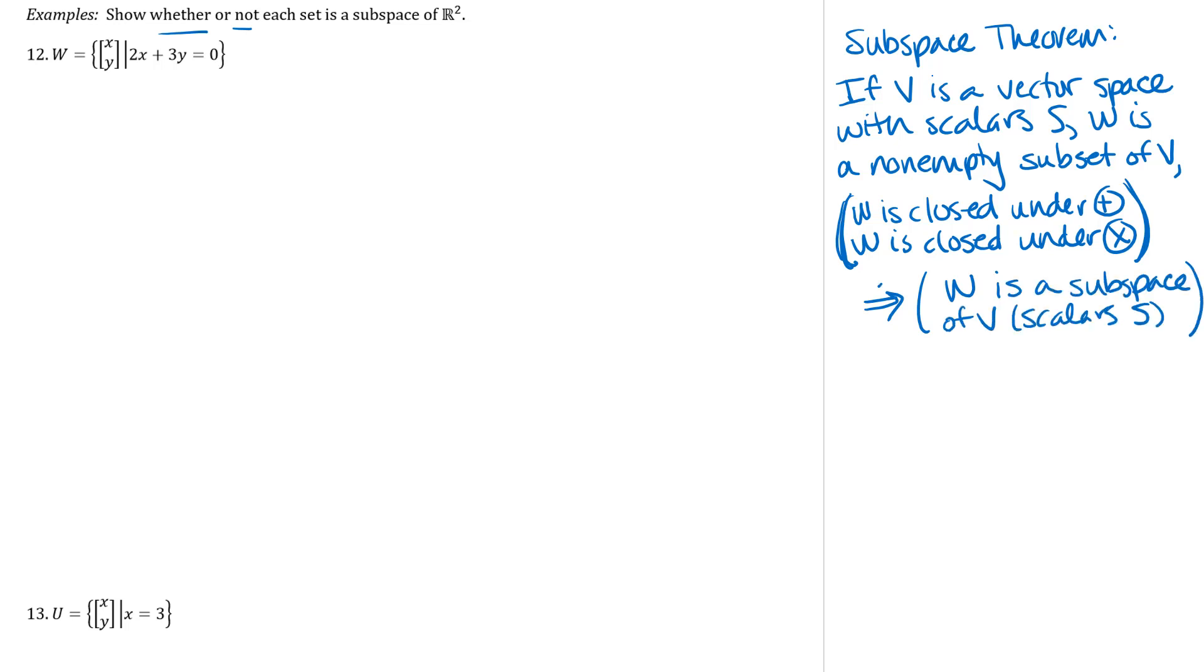And that is an if and only if theorem, so that theorem actually works both ways. So we might need to think about this a little bit. If I want to show that W or my set U here is indeed a subspace of R², then I need to show that those closure properties both hold and hold in general. If I have decided that my set is not a subspace, then I just need to show that one of those closure properties fails.